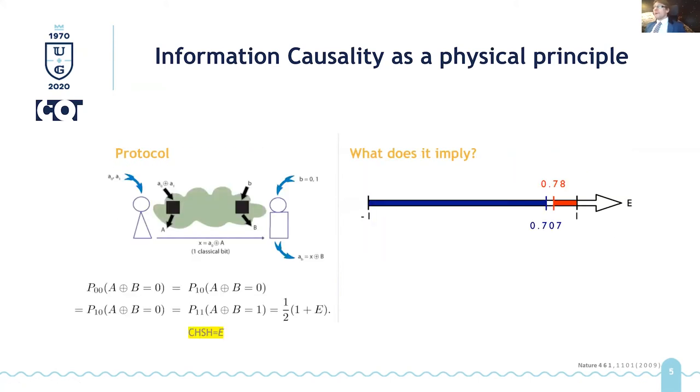Now, what we use this protocol for is we consider an information processing protocol involving something which we call a non-local box. So it's an imaginary object which is supposed to violate CHSH inequality. So Alice and Bob, they put some inputs, they observe outputs, they repeat their experiments many, many times,